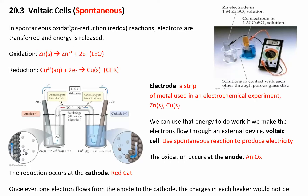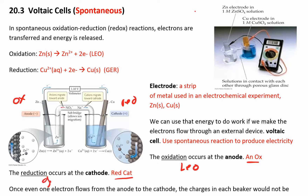We can look at some voltaic cells, which are spontaneous redox reactions. Your cell has oxidation happening on one side and reduction happening on the other. You have electrodes — just strips of metal — immersed in a solution with ions. The anode is always on the left and the cathode is always on the right. Oxidation always happens at the anode and reduction at the cathode. Remember: an ox and a red cat, Leo goes Ger.